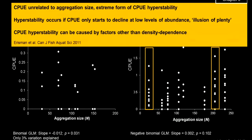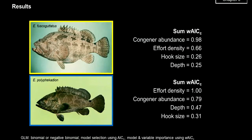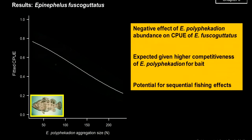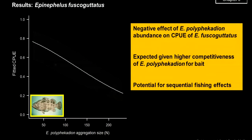To investigate factors causing hyperstability, I did generalized linear models on CPUE for each species. For Cephalopholis fuscoguttatus, what's really influencing CPUE is the abundance of the other species — as the aggregation of Plectropomus laevis increases, CPUE of this species declines considerably, because the other species is more competitive for bait. This highlights the potential for sequential fishing effects: while Plectropomus laevis is present, Cephalopholis fuscoguttatus is not particularly vulnerable. But as you fish down the more competitive species and overfish it, the other starts to become more vulnerable to the gear.